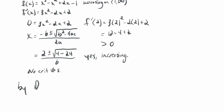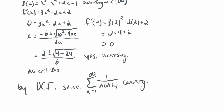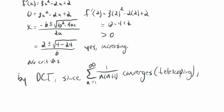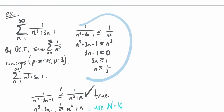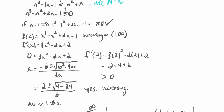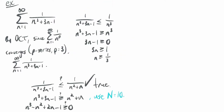By the direct comparison test, since the series n goes from 1 to infinity of 1 over n times n plus 1 converges (because it's telescoping), this series converges. Hopefully you can see how there's sometimes more than one way to do things. The comparison with the P-series is probably easier, but you're not always going to see the most efficient way. Whatever way works is fine.